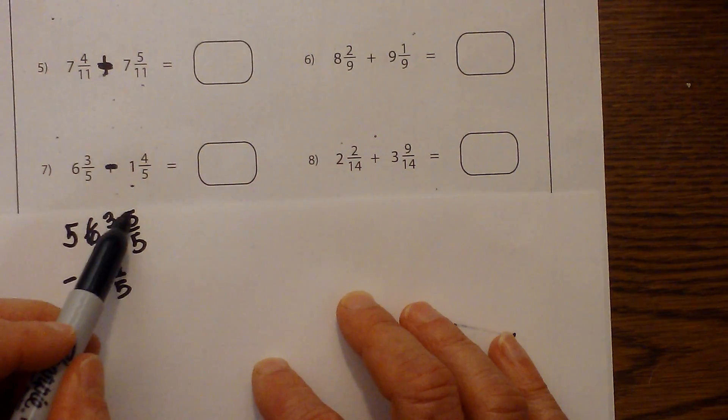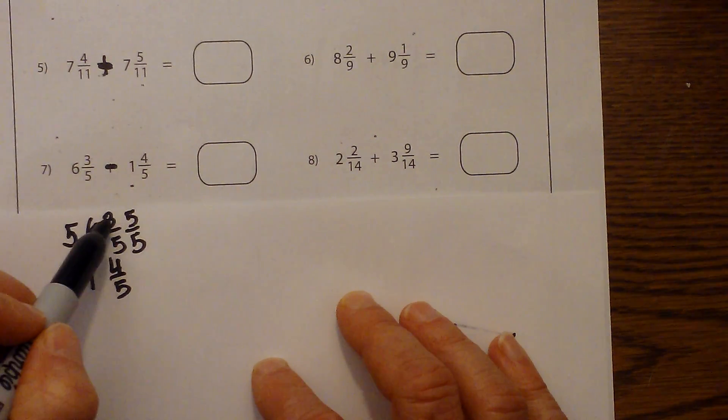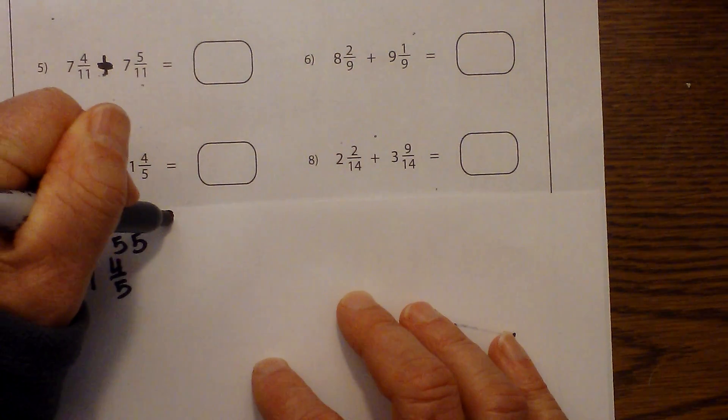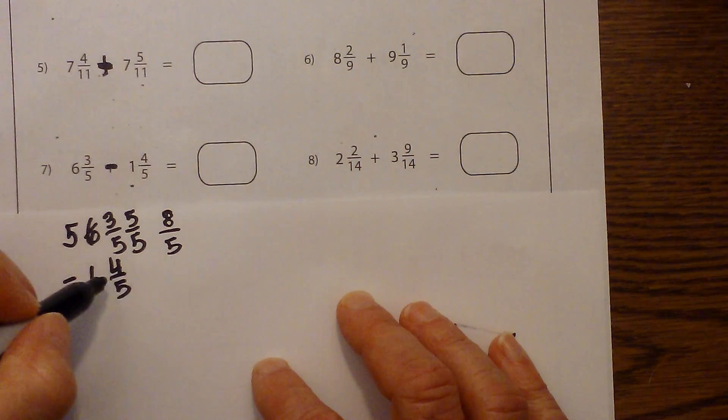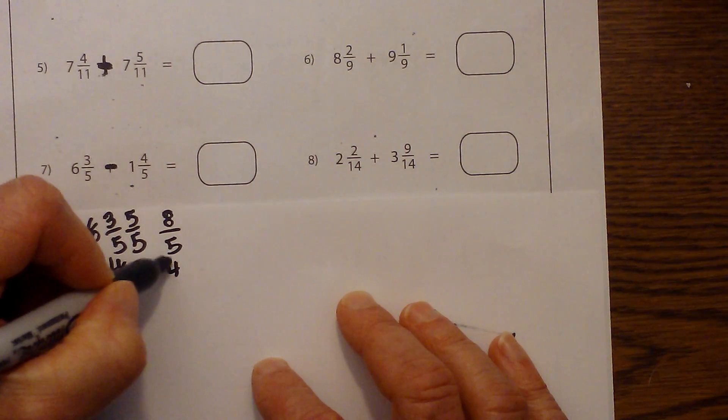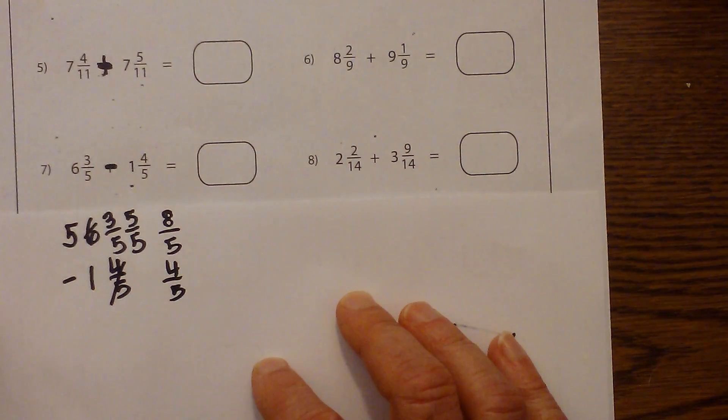So because 5 over 5 is 1, I now add these: 3 plus 5 is 8 fifths. And then we still have 4 fifths. So I'm just going to move 4 fifths over here so it's not quite as messy.